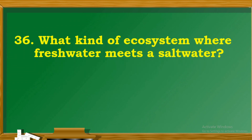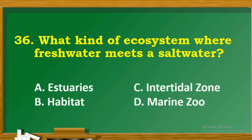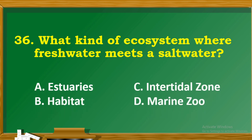Question 36: What kind of ecosystem is it where fresh water meets salt water? A. Estuaries. B. Habitat. C. Intertidal zone. D. Marine zoo.